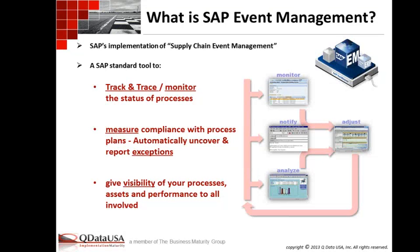It's a standard tool to track and trace or monitor the status of your business processes — any business processes. It started out in the supply chain space and has moved into basically anything in SAP. If there's a business process out there, there's typically a hook into event management to extract the plan and the events from SAP into event management, allowing you the ability to track it. It allows you to measure compliance against the plan — if I have a delivery that needs to be created by a certain time and it was created at another time, I can determine whether I have an exception or not.